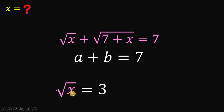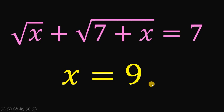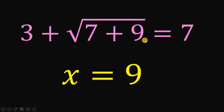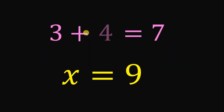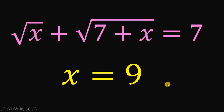Dividing both sides by 2 gives us a equals 3. Since a equals square root of x, we square both sides to get x equals 3 squared, which equals 9. Therefore, our answer is x equals 9. Let's double check by substituting x equals 9: square root of 9 is 3, and 7 plus 9 is 16, and square root of 16 is 4. So 3 plus 4 equals 7, which means the left hand side and right hand side are balanced. Hence, the answer is confirmed to be x equals 9.